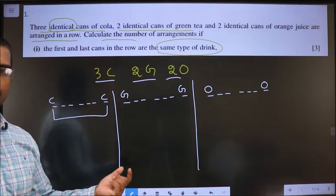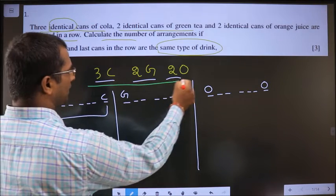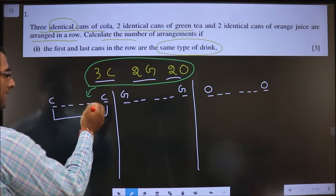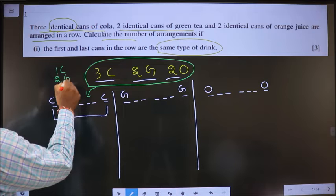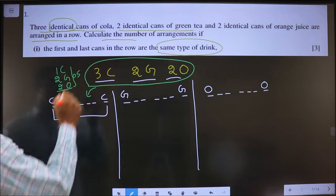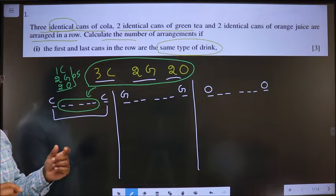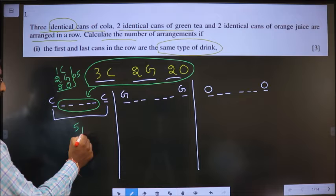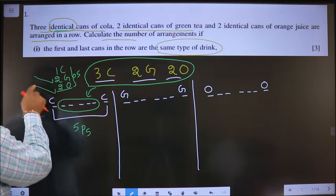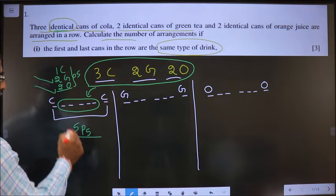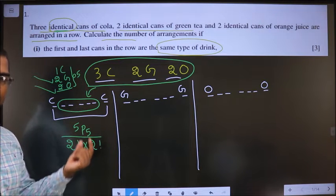Write arrangements for each and finally add all 3 to get the answer. Case 1 — Cola at ends: from the total, 2C are taken out. What are left? 1C, 2G, and 2O — total 5. These 5 need to be arranged in 5 blanks, which can be done in 5P5 ways. Since 2G are identical and 2O are identical, divide by 2! for 2G and 2! for 2O. These are the number of arrangements for the 1st condition.